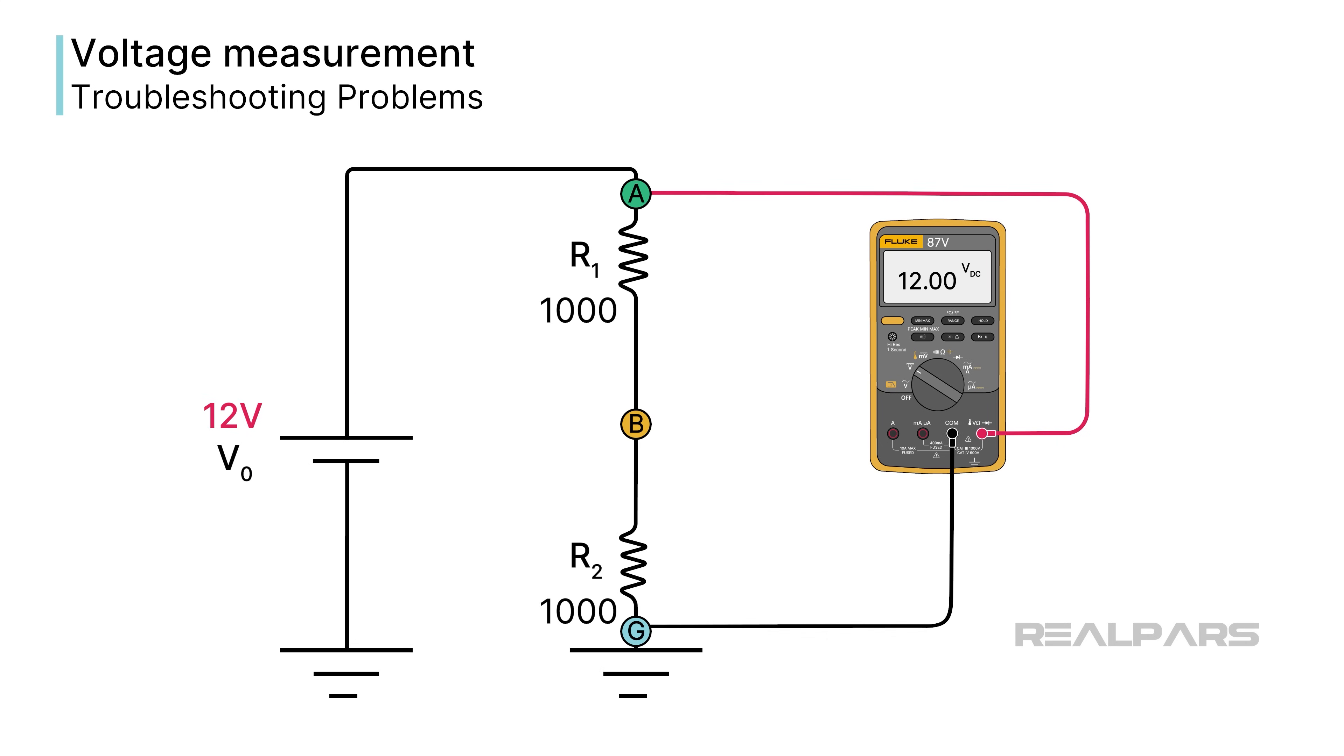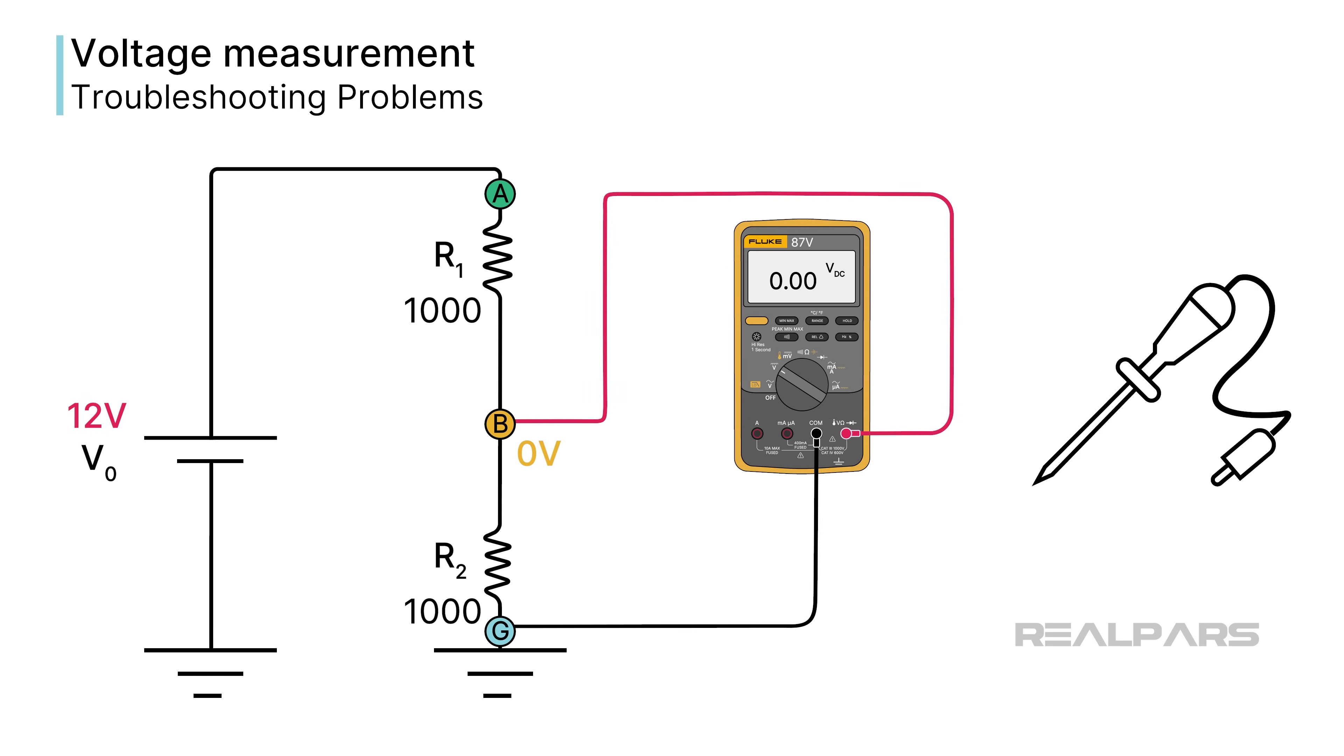Here's a troubleshooting question for you. What is the problem if the voltage at point A is 12 volts and the voltage at point B is 0? That means that there are 0 volts across R2. Therefore, R1 must be open. So, how do you find an open circuit? Keep moving the red lead until you measure 0 volts.